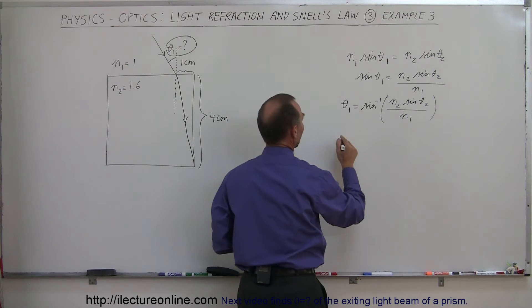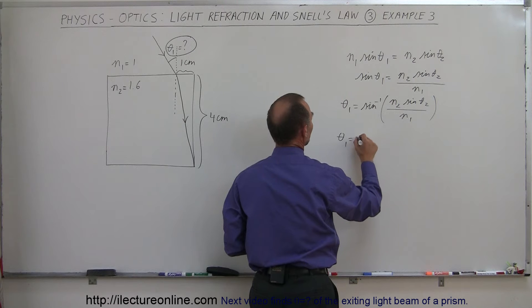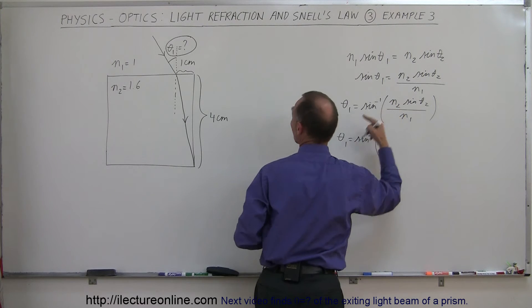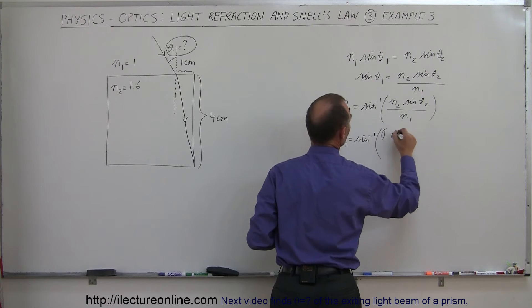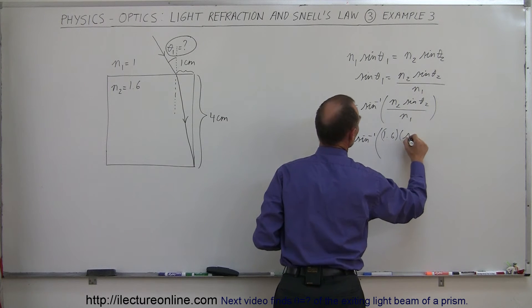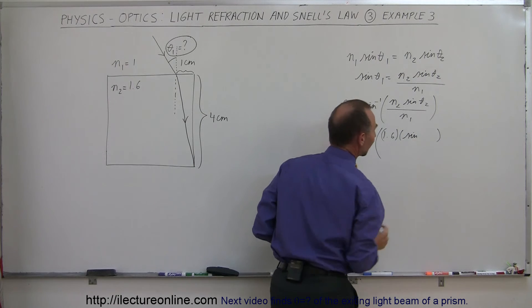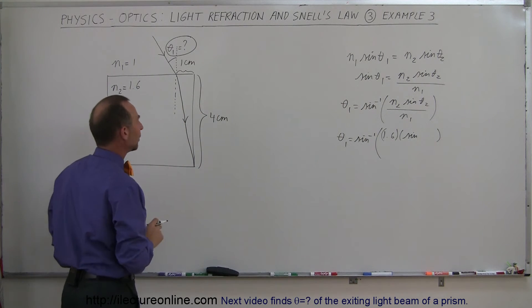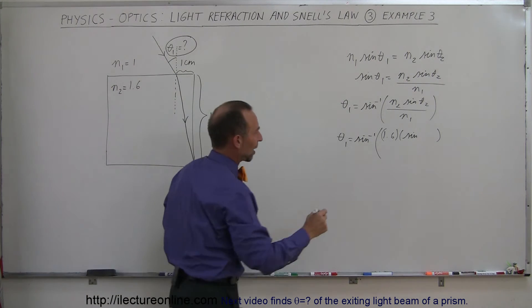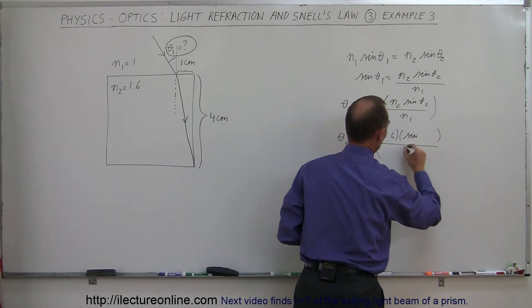And finally, when we plug in the values, we say that theta1 is equal to the arcsine of n2, that would be 1.6, multiply times sine of theta2, that would be the sine of, but here we have a little problem. We don't know yet what theta2 is, so we'll leave that blank for now. And of course, n1 would be the index of refraction on the outside, that would be 1.